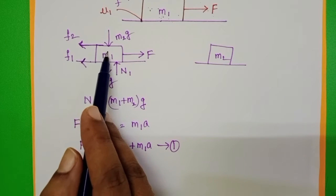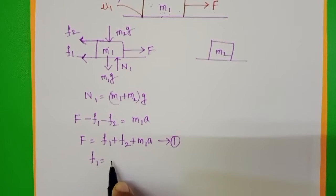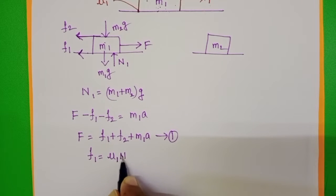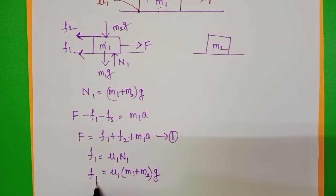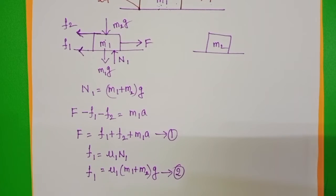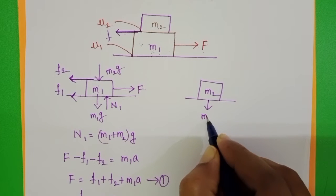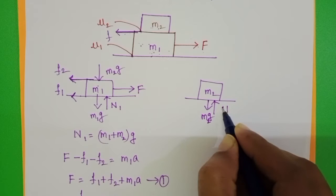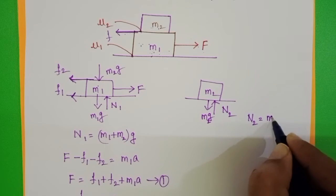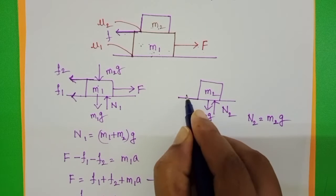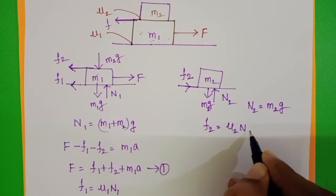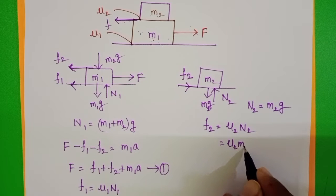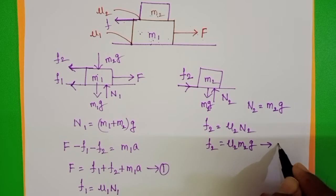Frictional force between the lower block and the horizontal surface, f1, equals coefficient of friction mu1 into normal force N1, that is mu1 into (m1 + m2) into g. Take this as equation 2. Weight of m2 acting in downward direction is m2*g. Normal force, let it be N2. N2 equals m2*g, and pseudo force f2 equals mu2 times N2, that is mu2 times m2*g. Take this as equation 3.